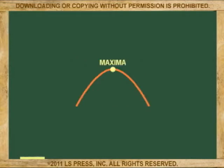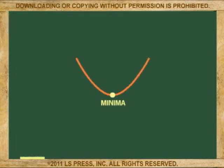When the vertex points up, we call the vertex the point of maxima. And when the vertex points down, we call it the point of minima.